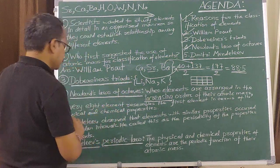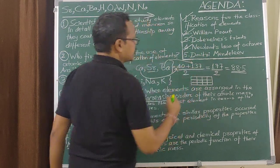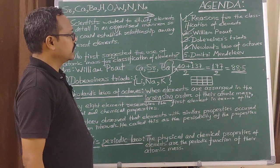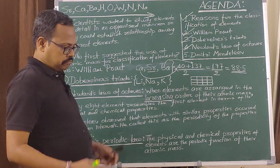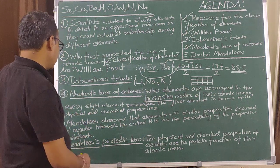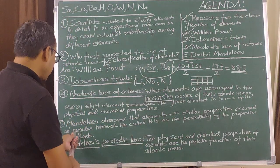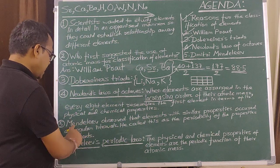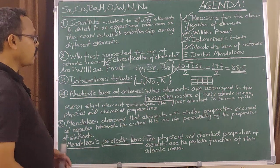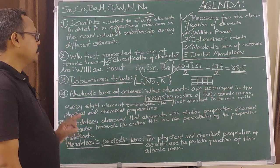The fifth contributor is Dimitri Mendeleev. He is one of the most famous scientists, well known for his contribution to the classification of elements in a very scientific way. Mendeleev observed that elements with similar properties occurred at regular intervals — he observed the periodicity of properties of elements.